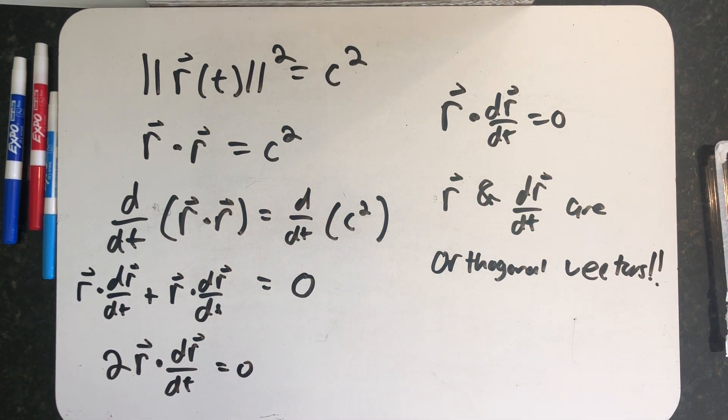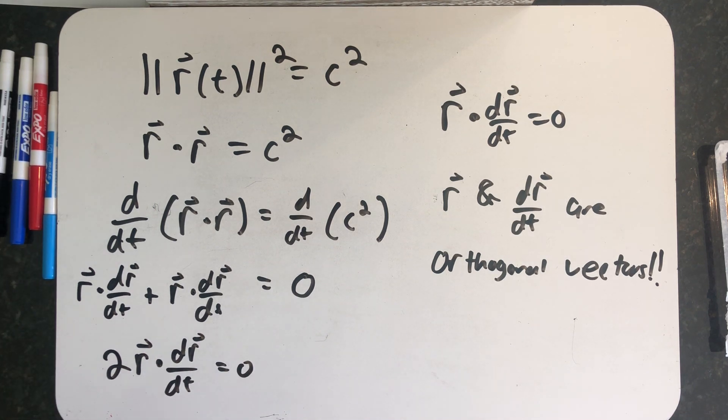Below this video, you should see a link to a Geogebra app that actually has a curve graphed on a sphere with the position R and the velocity vectors included so that we can check out an example where we see that these two vectors really are perpendicular to each other.